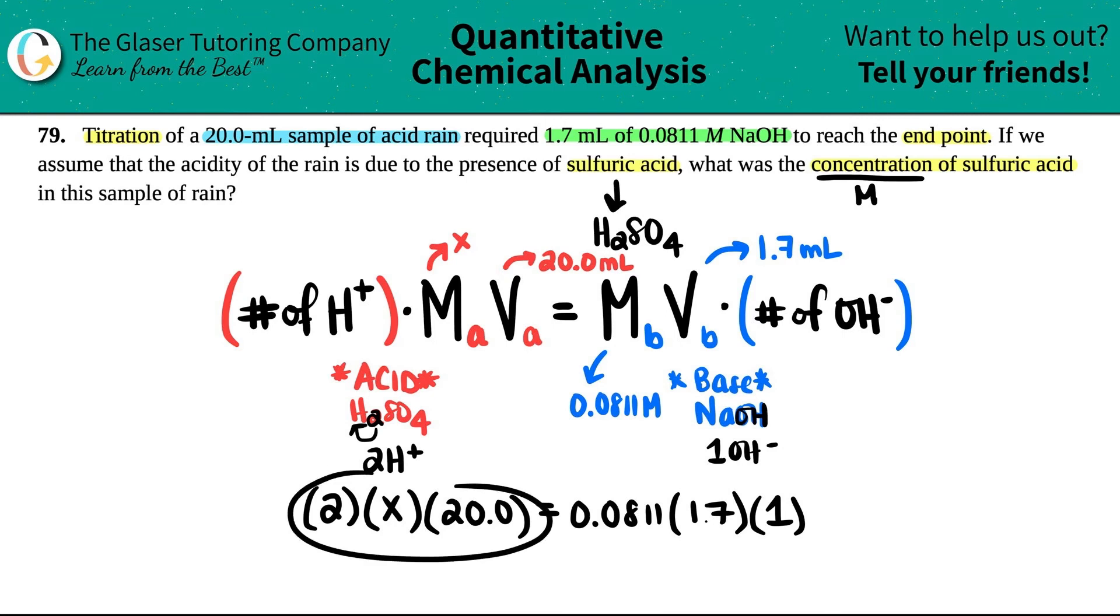On the left-hand side, this would just be 40X, and then 0.0811 times 1.7, I get 0.13787.